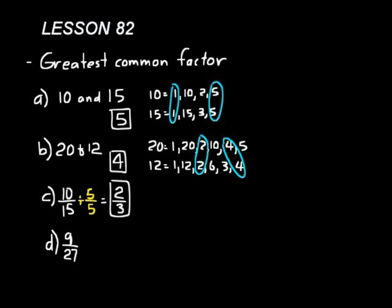Let's reduce nine over twenty-seven. First, let's find the greatest common factor between 9 and 27. For 9, we'd have 1, 9, and 3, because 3 times 3 is 9. For 27, we'd have 1 times 27, and then 3 times 9. They both have 3 in common and they both have 9 in common. 9 is the greatest common factor.